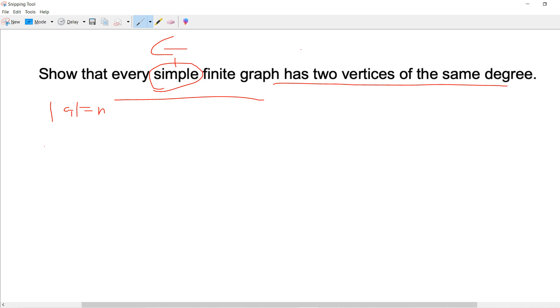Then what is the possible number of degrees, right? So the possible degrees, since it's simple, the possible degree of the graph can only be 0, or 1, or 2, up to n minus 1.